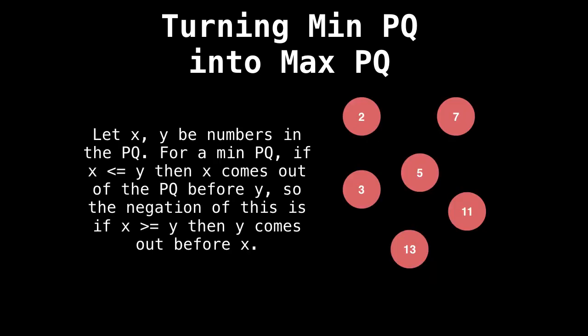Suppose for a moment that we have a priority queue consisting of elements that are on the right side of this screen, and that these are in a min priority queue. So if x and y are numbers in the priority queue, and x is less than or equal to y, then x will come out of the priority queue before y. The negation of this is x is greater than or equal to y. And so y then comes out before x, because all these elements are still in the priority queue.